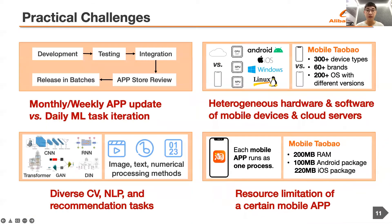Let's first look at the compute container. During building the compute container, we encounter several practical challenges. First is the long update cycle of mobile apps — machine learning tasks require frequent experiments and deployments so that the effectiveness of different algorithms and models can be quickly verified. Second is the heterogeneous backend: cloud servers and mobile devices significantly differ in hardware and operating systems, and among mobile devices the ecosystem is even more fragmented. Third is diverse machine learning tasks: industrial applications involve many kinds of tasks requiring diverse model structures, and pre-processing and post-processing involve lots of image, text, and numerical processing methods. Last is app resource limitation: each mobile app has only one single process and is under strict resource restriction to guarantee user experience.